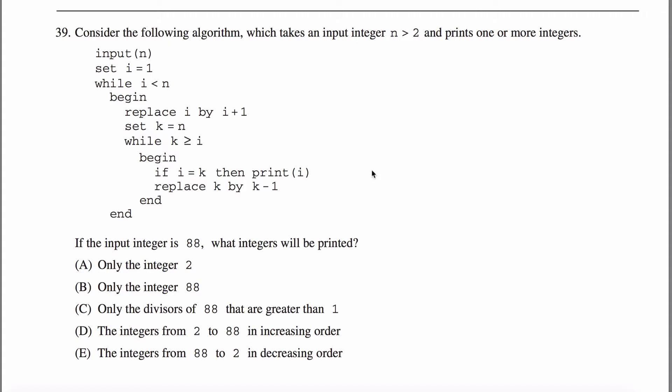Alright, here's problem 39 off the GRE subject math practice test. We're given this algorithm here that we'll have to follow. It takes as an input n greater than 2 and prints one or more integers. What we are asked is what will be printed if you put 88 as the integer input.